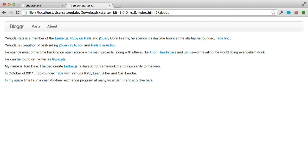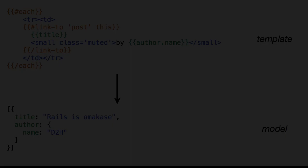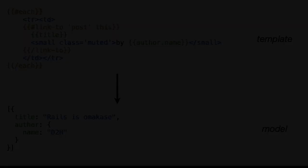So far everything we've done has been pretty static. What we'd like is that clicking the Posts link shows a dynamically generated list of all posts, backed by some kind of JSON object. In Ember, a template is always backed by a model. Usually that model is JSON from a server, but it can really be anything. When the underlying model changes, the template will automatically update itself — you don't need to write any code to go into the DOM and update it. That just happens for you automatically.